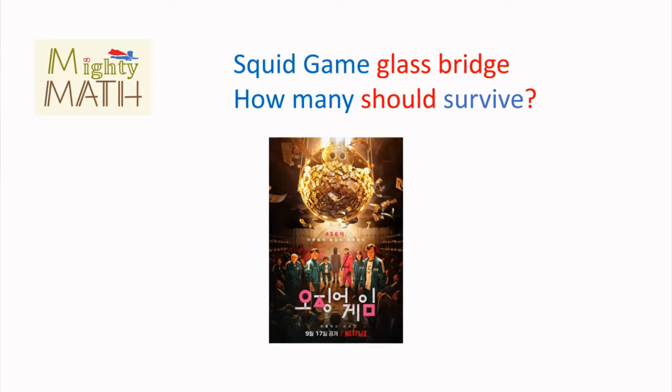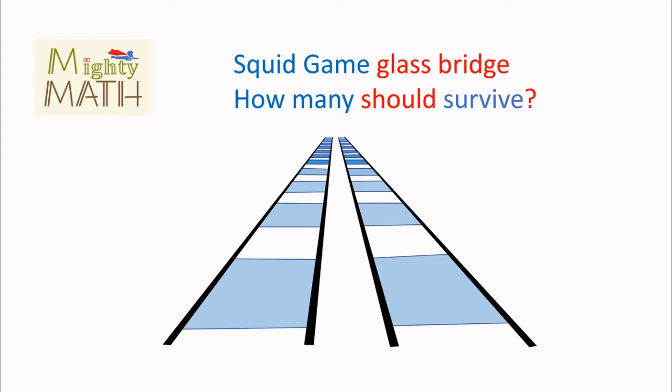Still here? Well, on this chapter, the 16 remaining players have to cross a glass bridge consisting of 18 steps. Each one of them with either regular glass that would break under their weight and send them falling to their certain death, or tempered glass that can hold the weight of even two players.